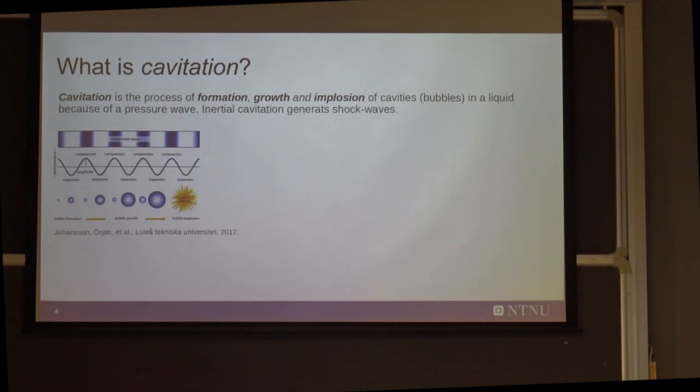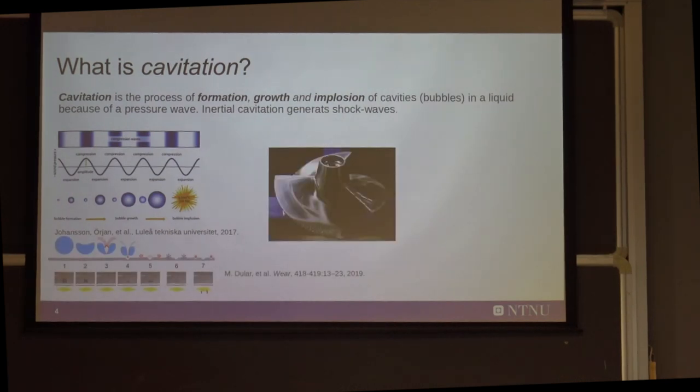And then this implosion causes a very particular state, a plasma state that is characterized by very high temperature and very high pressure. So this process is very well known for very long time and this is a technological problem for the propellers of boats in the sense that when the implosion happens close to a metal surface, there is the high condition can generate micro jets that are actually damaging very strongly the metal surfaces.